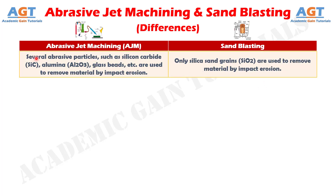In abrasive jet machining, several abrasive particles such as silicon carbide, alumina, glass beads, etc. are used to remove material by impact erosion. Whereas in sandblasting, only silica sand grains are used to remove material by impact erosion.